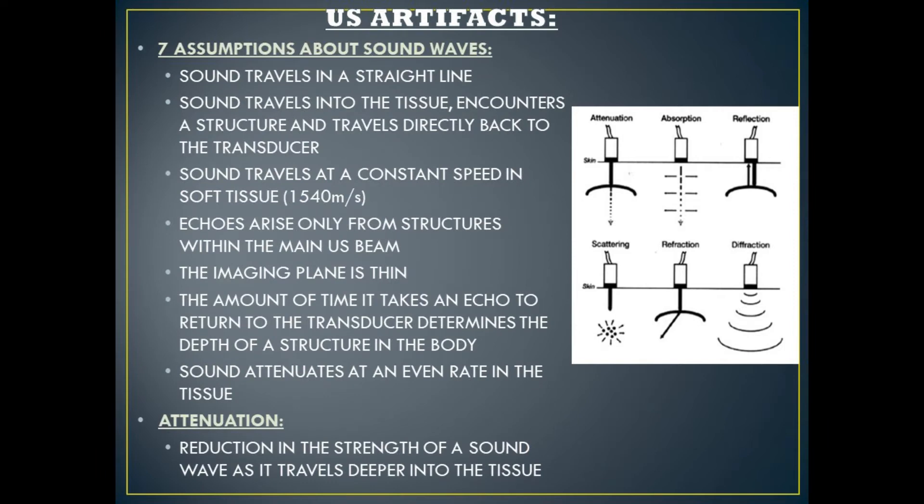What are the assumptions that an ultrasound machine makes about sound waves? Number one, sound travels in a straight line. Number two, sound travels into the tissue, encounters a structure, and travels directly back to the transducer. Number three, sound travels at a constant speed in soft tissue — 1540 meters per second. Number four, echoes arise only from structures within the main ultrasound beam. Number five, the imaging plane is thin. Number six, the amount of time it takes an echo to return to the transducer determines the depth of a structure in the body. And number seven, sound attenuates at an even rate in the tissue.